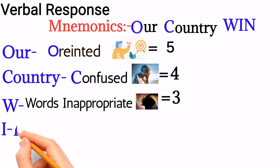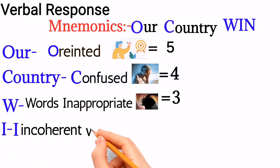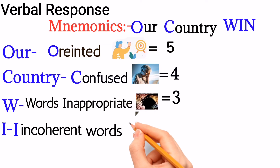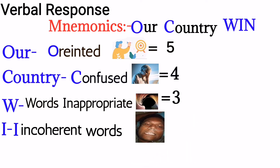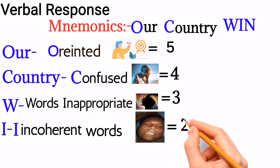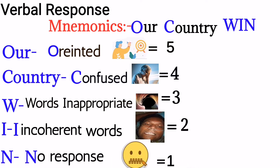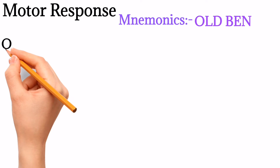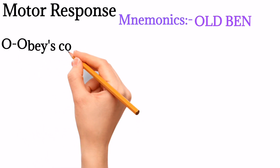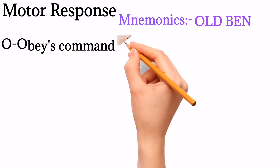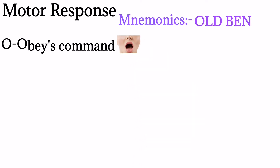I is for Incoherent words — the patient makes unintelligible sounds. When you ask or call the patient to open his mouth and he opens it, the score will be 2. If there is no response at all, the score will be 1.